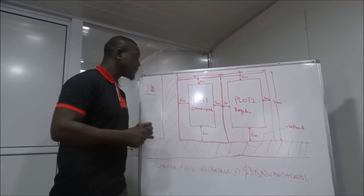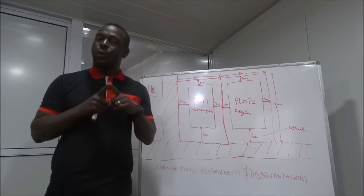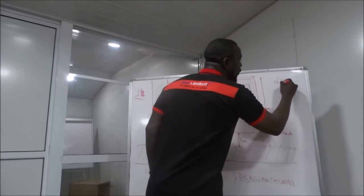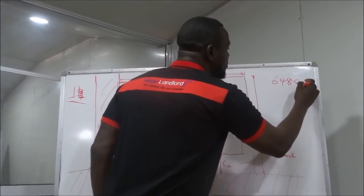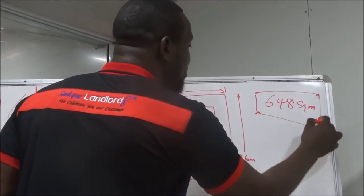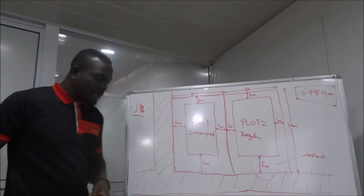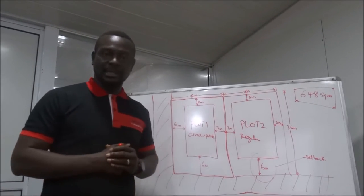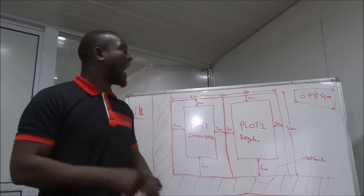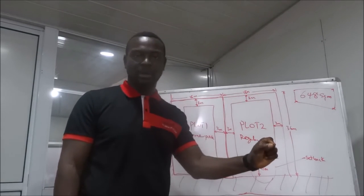But are they always bigger? No. They are not always bigger. A standard plot size in Lagos area is taken to be about 648 square meters. Well, it can be any size that a plot is called is what the plot is. But this is like a standard plot size. Now, most corner pieces are bigger than 648 square meters. Yes, where you have all the other regular plots are 648. But some corner pieces are smaller than 648 square meters or just exactly 648 square meters.